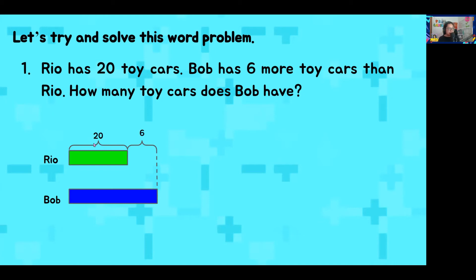So, we now have the two numbers we can find in our word problem. The missing part or the question that we want to answer. How many toy cars does Bob have? We will be putting a bracket and a question mark for Bob's model in order to answer that. Now that we look at the model, what do you think we should do next? Should we add the numbers 20 and 6 to get the answer of Bob's toy cars? Or should we subtract them? If you answered add or plus, then you are correct.